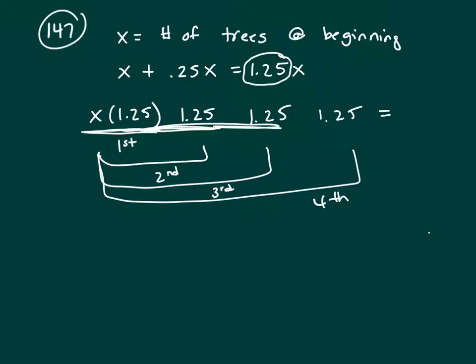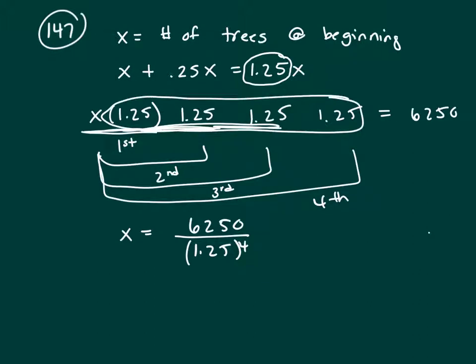Now, they tell me at the end of the fourth year, how many trees do I have? 6,250. Alright, so this is X equals 6,250 divided by 1.25 to the fourth, right? And if I want to solve for X, I divide both sides by 1.25 to the fourth. Now, X is what we're trying to find, the number of trees at the beginning. I don't like decimals, even though I use 0.25 up here.